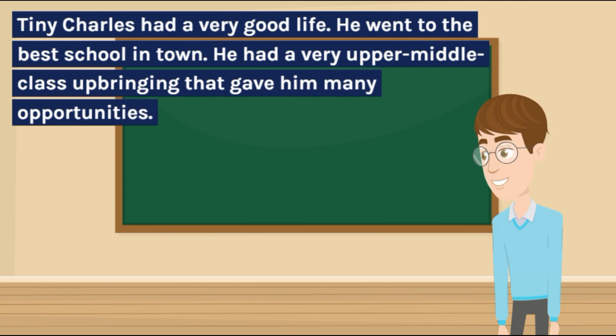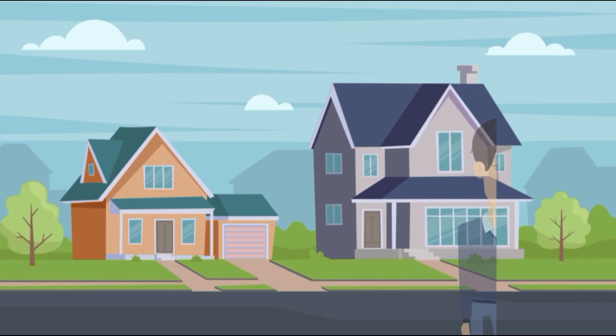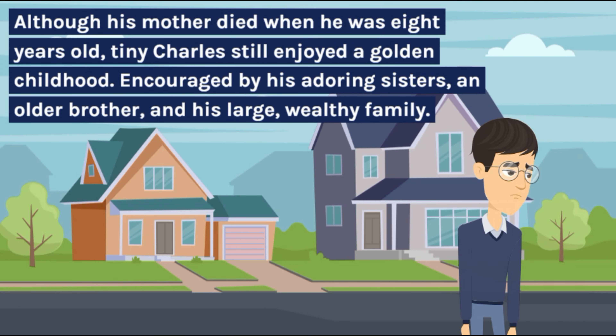Tiny Charles had a very good life. He went to the best school in town and had a very upper-middle-class upbringing that gave him many opportunities. Although his mother died when he was 8 years old, tiny Charles still enjoyed a golden childhood, encouraged by his adoring sisters, an older brother, and his large, wealthy family.